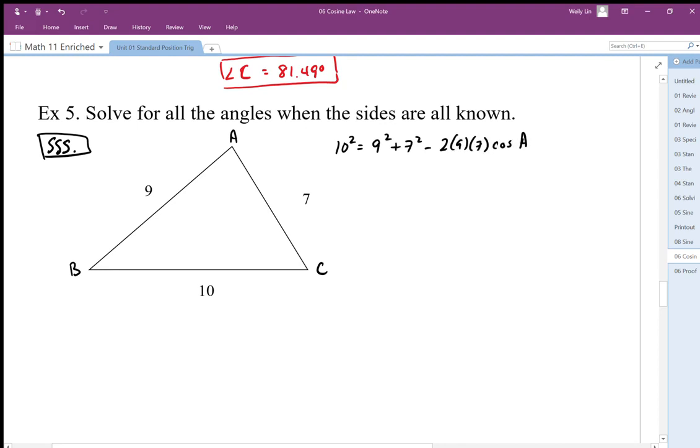So solving for cosine A, I'm gonna end up with cosine A. I clear that: 10 squared minus 9 squared minus 7 squared.